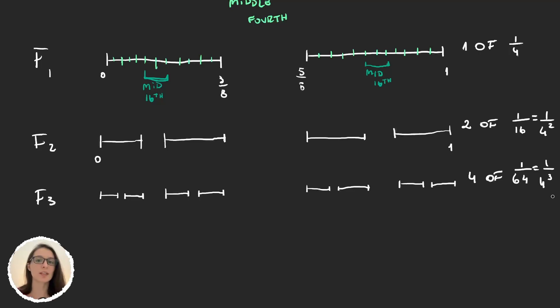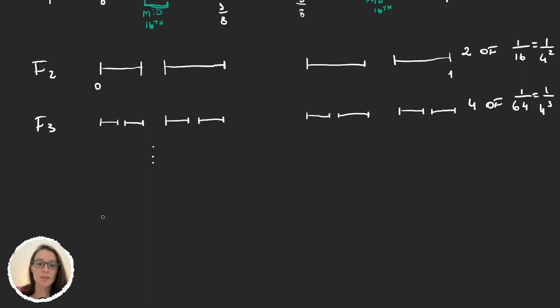So we could say that we go on like this. And on the step F_k, we would be removing 2^(k-1)—because F₃ is 4, so it's 2^(3-1) = 2². And so the same applies to the other ones. So 2^(k-1) intervals of length, it's very simple, it's 4^(-k).